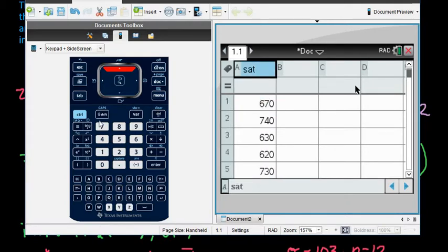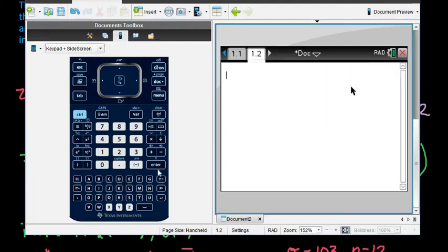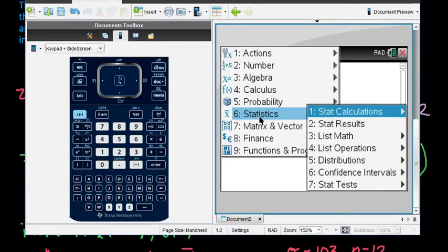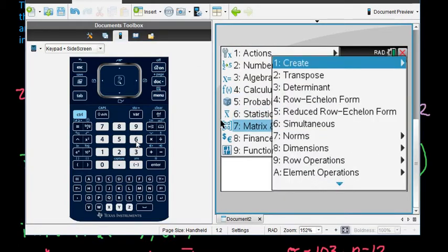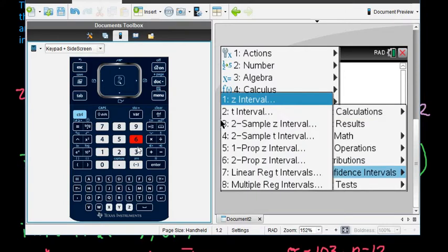Once you do that, we're going to do control and I, and I'm going to add a calculator screen. I prefer to work in the calculator screen. You can do this in the spreadsheet screen, it's my preference to put it in here. Then we're going to go to menu and statistics, and this time we're going to choose statistics and confidence intervals and a z-interval.